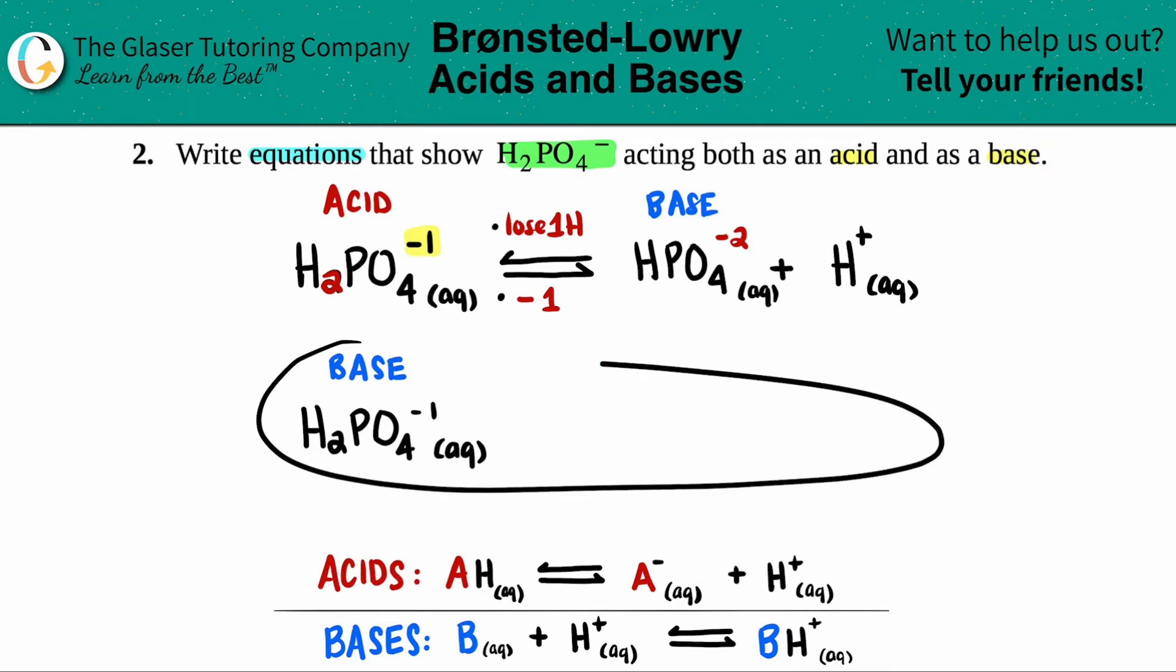Now we just have to do the flip-flop for the base. If you notice down on the bottom, the base will always gain an H. It will pick up the H. The H is on the left side, as opposed to the acid which will lose an H. The H is on the product side. So in this case, now I have to say, here's my base. And it's now always going to be plus H aqueous. We got to write that double arrow, because we're dealing with acids and bases at equilibrium. And now all we have to do is just combine this into one.